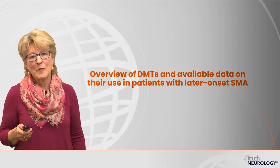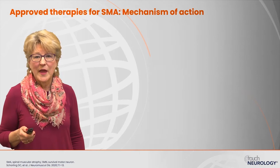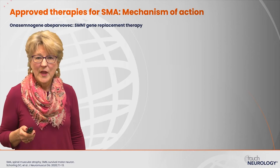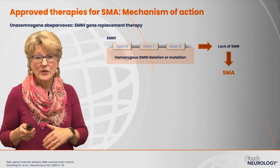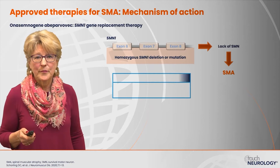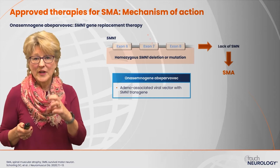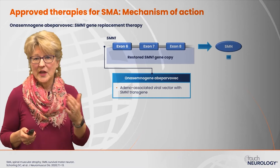We'll talk about an overview of disease-modifying therapies and available data on their use in patients with later onset spinal muscular atrophy. One approved therapy is onasemnogene abeparvovec, a gene transfer therapy. Patients with SMA lack the SMN1 gene, resulting in a lack of survival motor neuron protein. Onasemnogene abeparvovec is an adeno-associated viral vector containing a transgene that codes for SMN1, so the SMN1 gene is effectively replaced, resulting in increased SMN protein production with improved or preserved motor function.